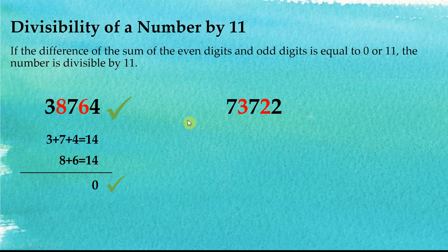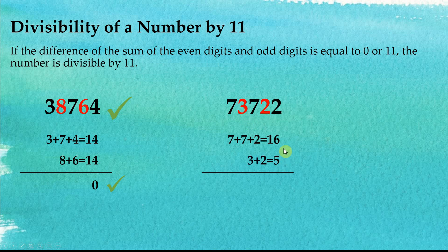Another example: the odd digits are 7, 7, and 2, and their sum is 16. The even digits are 3 and 2, and their sum is 5. The difference of the two sums is 11, and if the difference is 11, then the number is divisible by 11.